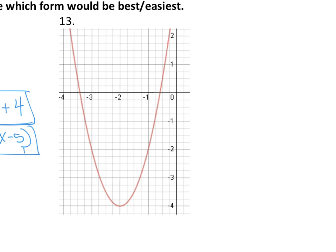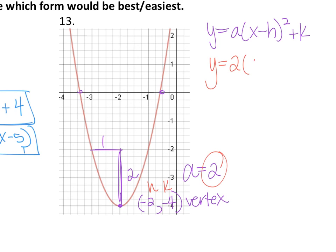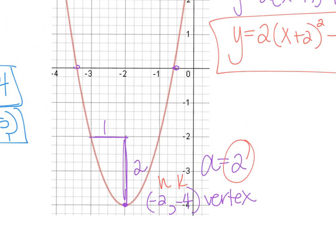For number 13, I can find my vertex easily at negative 2 and negative 4. The x-intercepts aren't as clear, but my slope is 2 since I go up 2 and over 1. So I fill out y equals 2 times x minus negative 2 squared plus negative 4, which gives y equals 2 times x plus 2 squared minus 4. You'll need to determine which form is best. If you use intercept form and it's harder, know the other way too.